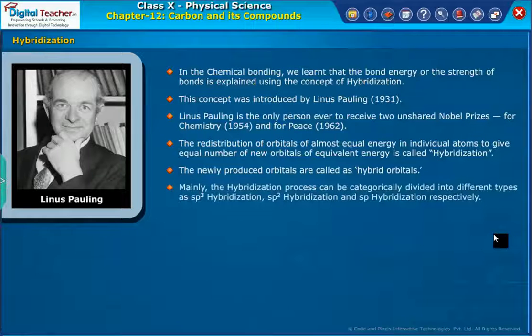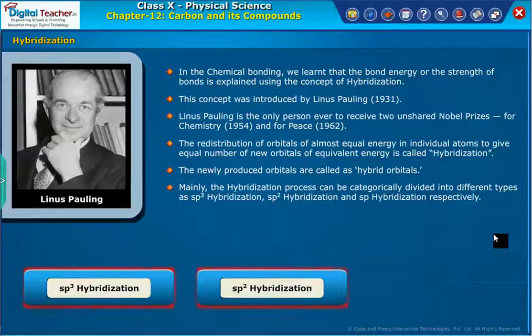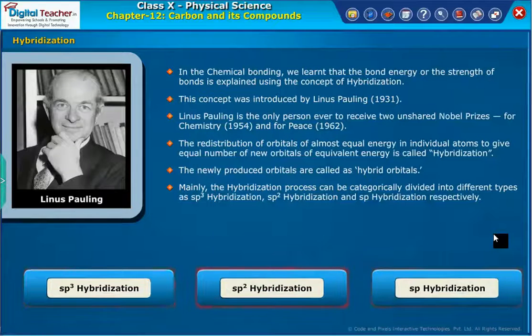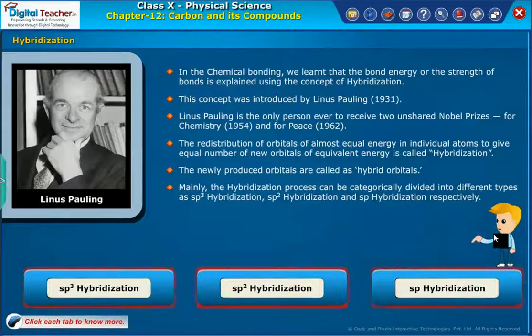Mainly, the hybridization process can be categorically divided into different types as SP3 hybridization, SP2 hybridization, and SP hybridization respectively. Click each tab to learn more.